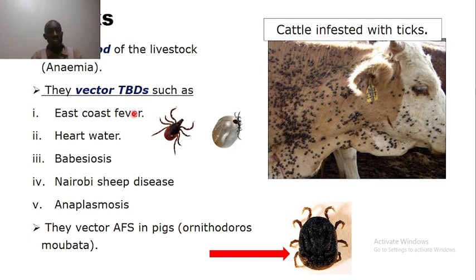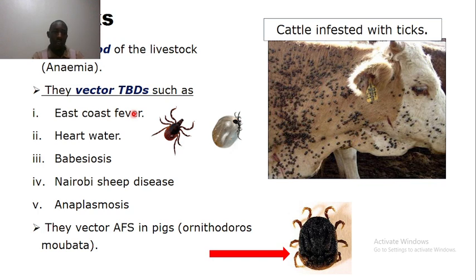Starting with ticks — in Uganda and East Africa at large, ticks are the major external parasites affecting livestock. Ticks suck blood, causing anemia, so animals will become anemic. These ticks are of veterinary importance because they vector various tick-borne diseases.